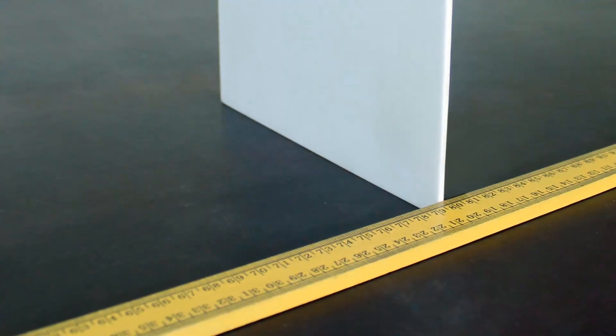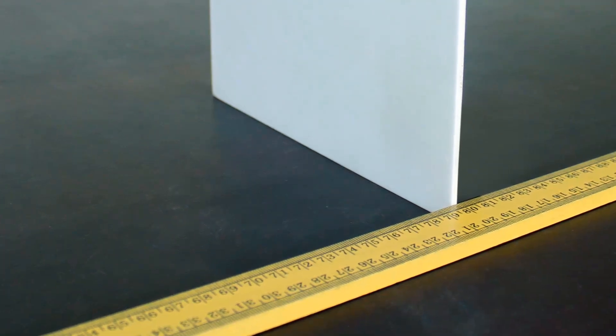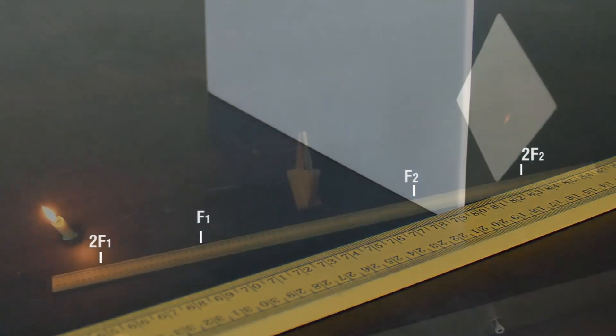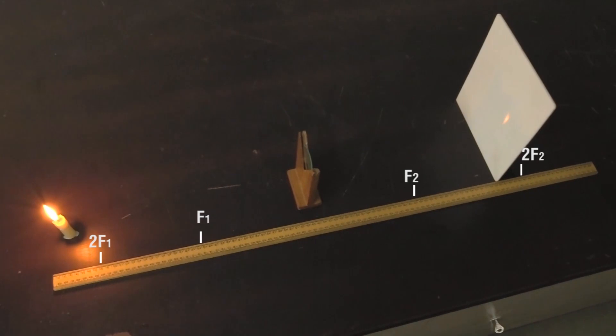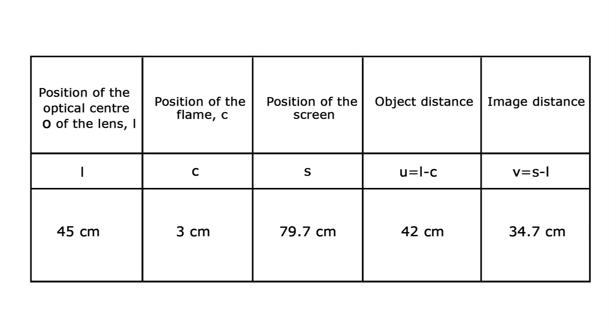This distance between the lens and the screen is taken as image distance V. The image lies between F2 and 2F2. Notice that the image is real, inverted, and diminished. Record the observations in the table.